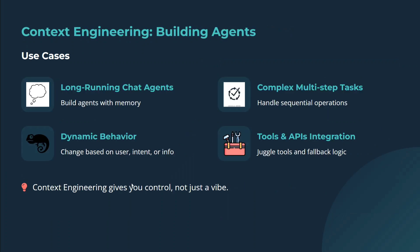While in the case of context engineering, the use cases include long-running chat agents, building agents with memory. You are also updating your context on the fly at times — complex multi-step tasks, dynamic behavior that changes based on user intent or information, and tools and API integration as well. Context engineering gives you full control.